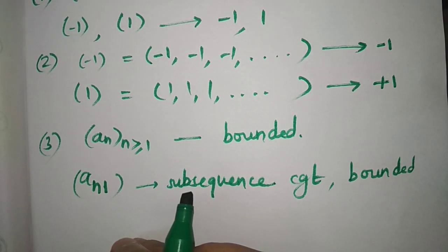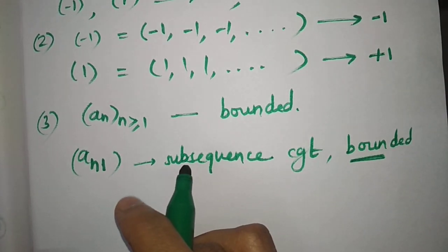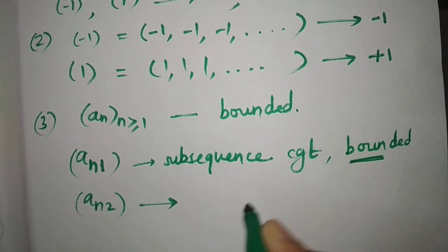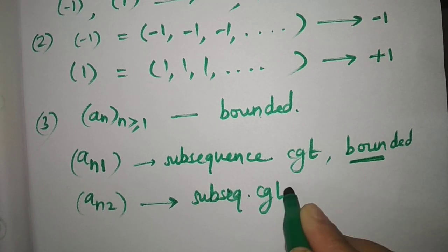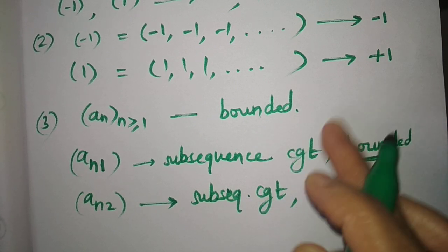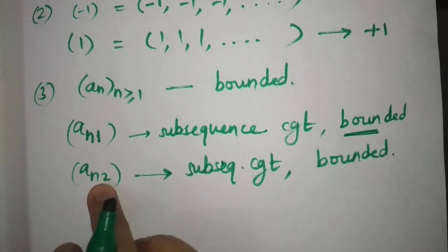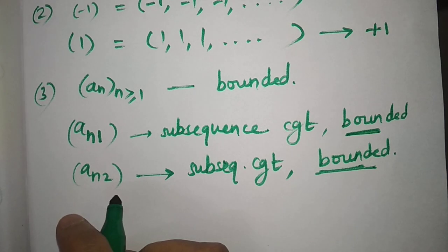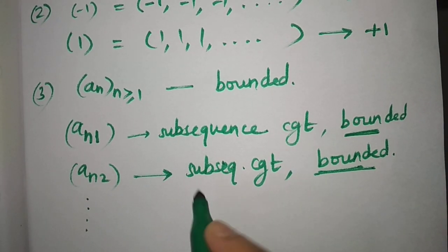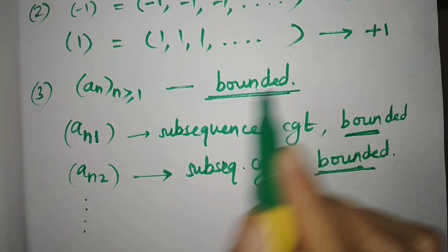Now apply the Bolzano-Weierstrass property again to a_{n_1}. Since it is bounded, it has a convergent subsequence — denote it a_{n_2}. This is also bounded, so we apply Bolzano-Weierstrass again to get another convergent subsequence, and so on. Continuing this process, we obtain infinitely many convergent subsequences of a_n. Therefore option 3 is also correct.